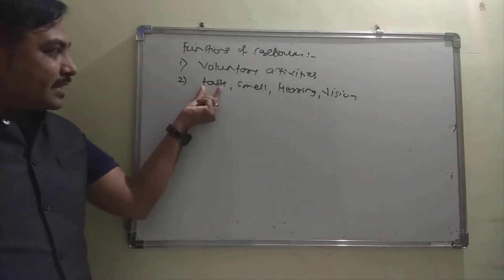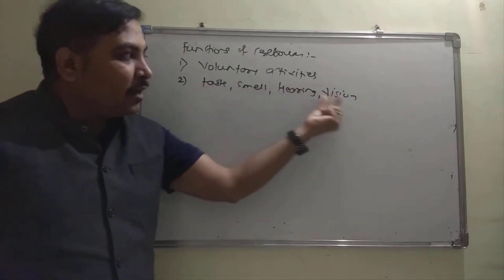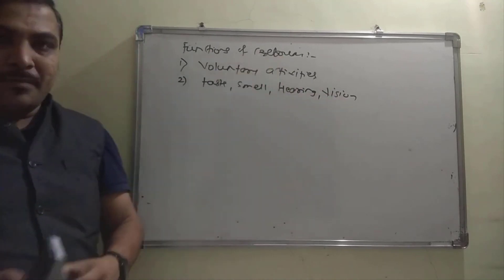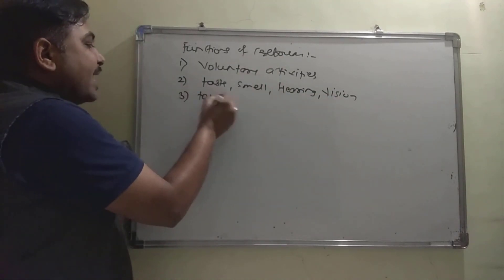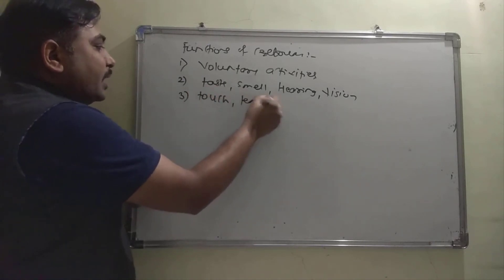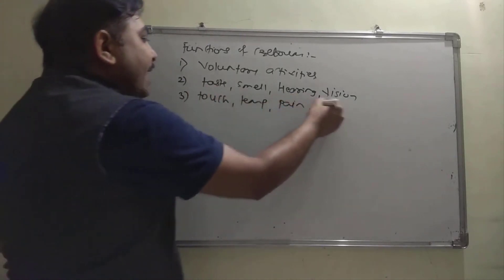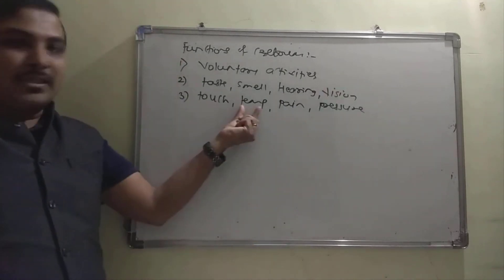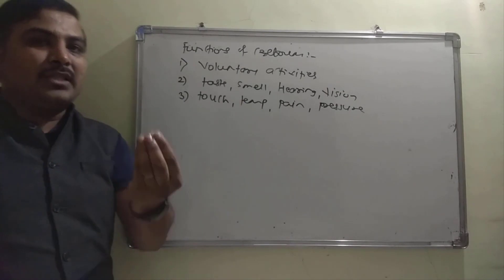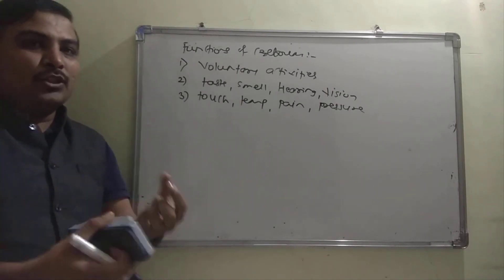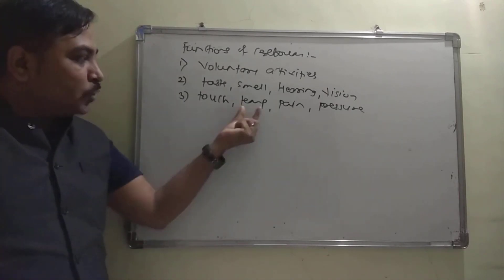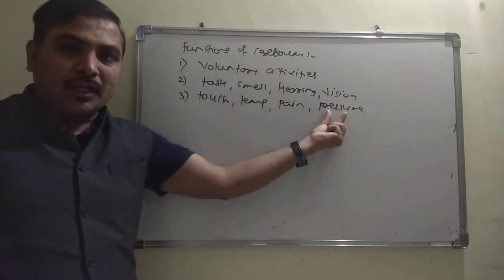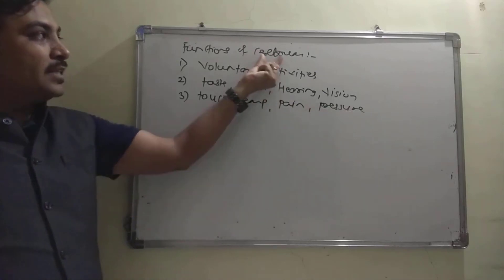All these senses — taste, smell, hearing, and vision — are controlled by the cerebrum. It also controls general sensations like touch, temperature, pain, and pressure. For example, if you feel whether something is cold or warm, that temperature sense comes from the cerebrum.